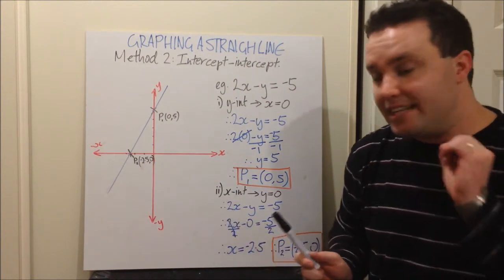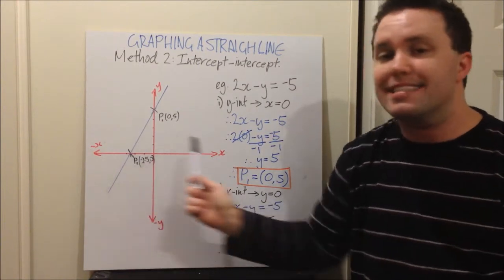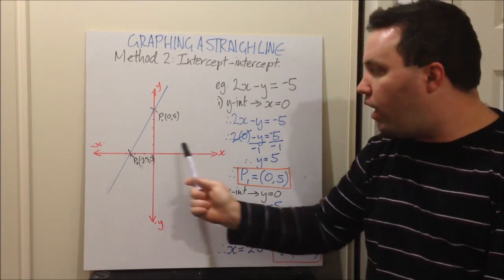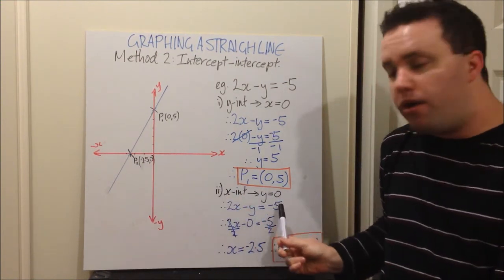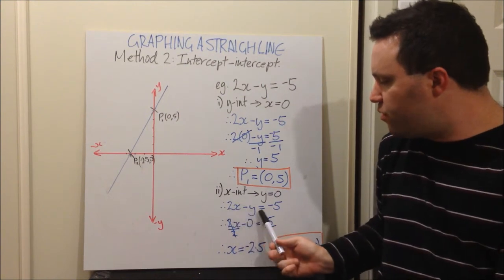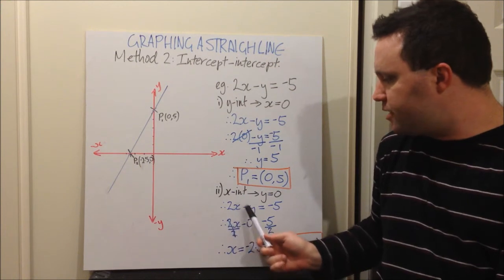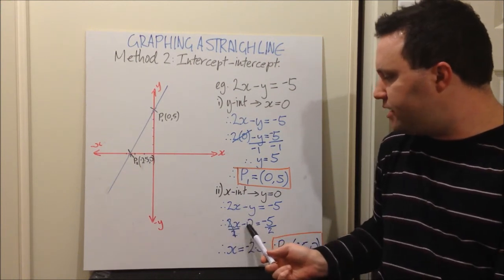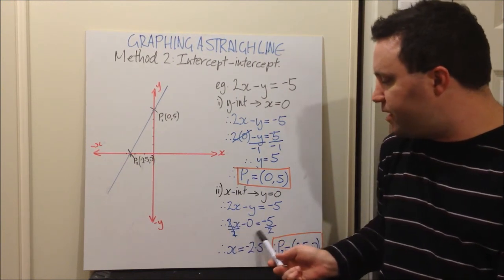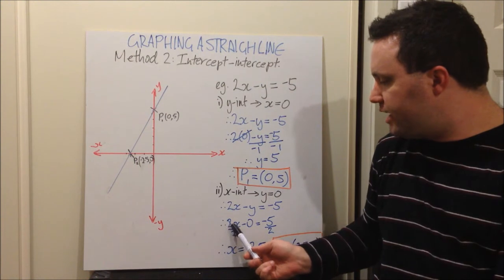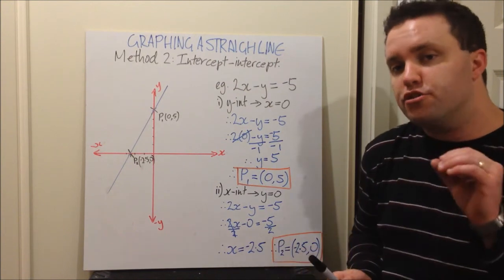Number 2, find your x intercept. At my x intercept where the line crosses the x axis, that is where y equals 0, because all the way along this line y is equal to 0. So we set y as equal to 0. Therefore, 2x minus y is negative 5. Substitute y is 0, so I'm left with 2x minus 0 is negative 5. I just want x on its own, so I divide both sides by 2. 2x divided by 2 is just x. Negative 5 divided by 2 is negative 2.5.